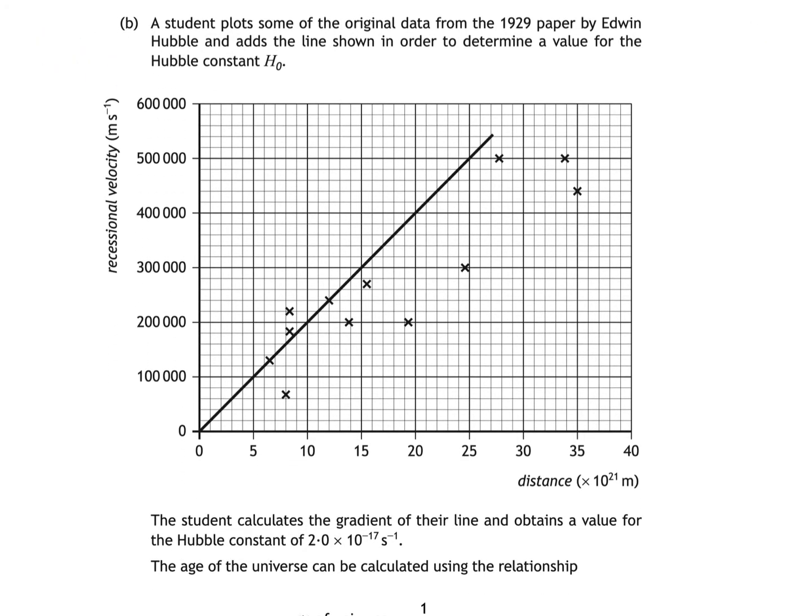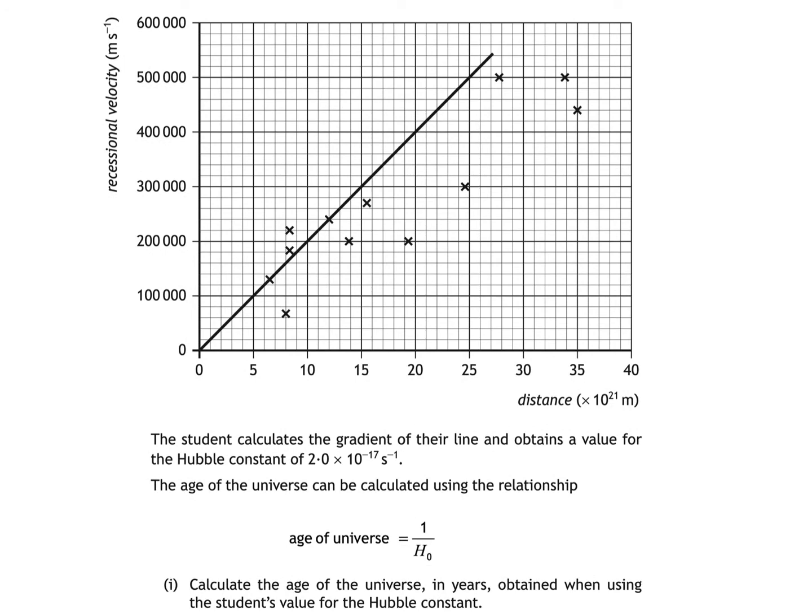The student calculates the gradient of the line and obtains a value for the Hubble constant of 2.0 times 10 to the minus 17 seconds to the minus 1. The age of the universe can be calculated using the relationship age of universe equals 1 over H0. Calculate the age of the universe in years obtained when using the student's value for the Hubble constant.